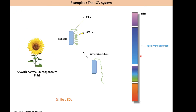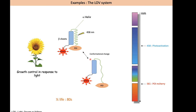Another powerful tool is the LOV domain system, which also comes from plants where it is implicated in growth control in response to light. At the molecular level it is a simpler, monomeric system consisting of an alpha helix and a beta sheet. Upon blue/UV light illumination, there is a conformational change in the alpha helix that opens the molecule. A protein of interest can be fused to this construct, and upon illumination the protein is liberated to exert its effect in the cell. The half-life of opening is shorter than with the CRY2 system — approximately 80 seconds.